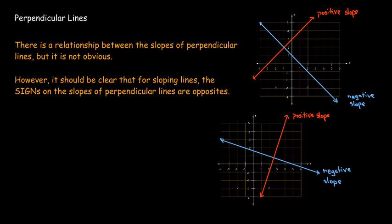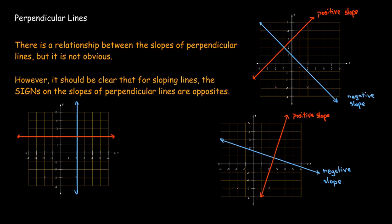And then, just one further note, vertical lines are perpendicular to horizontal lines, and vice versa. Here, the slopes are neither negative nor positive.